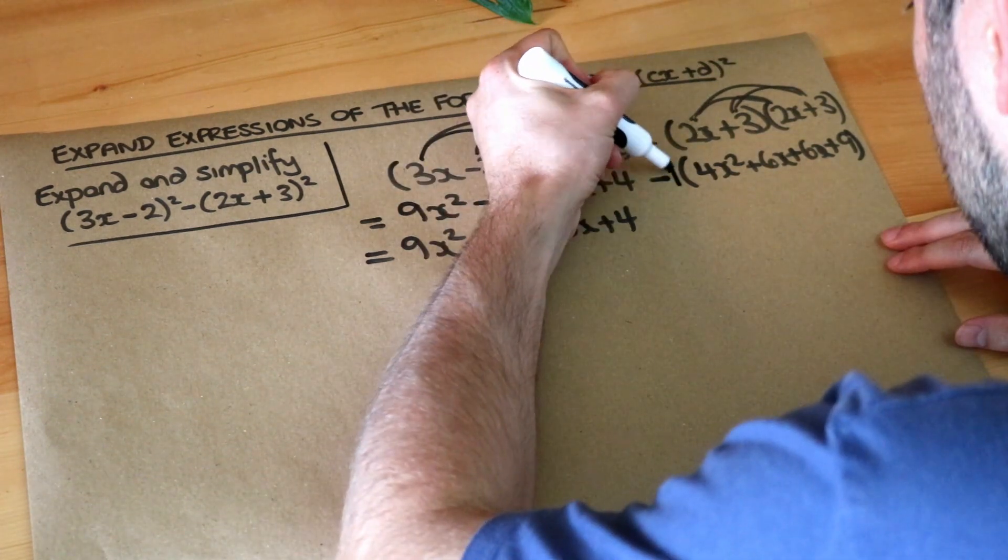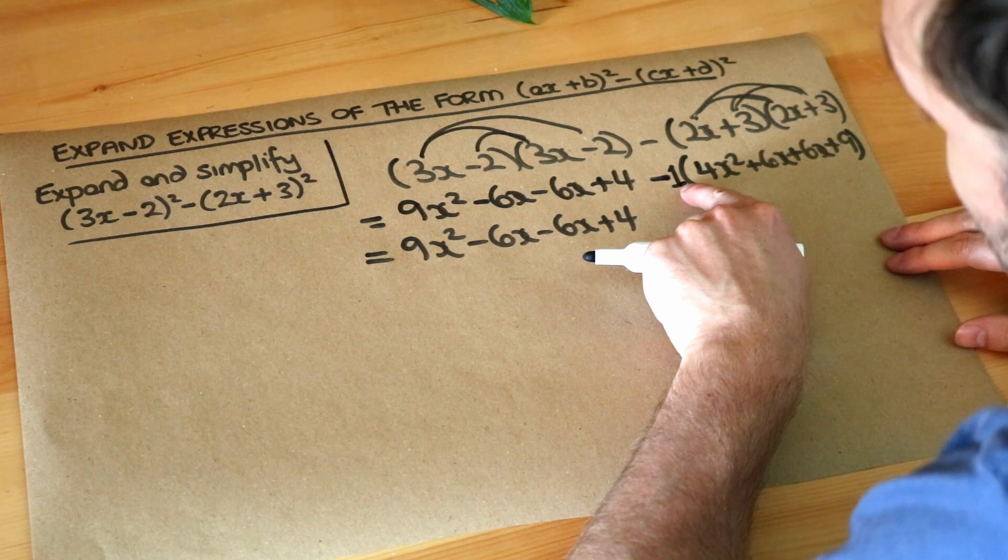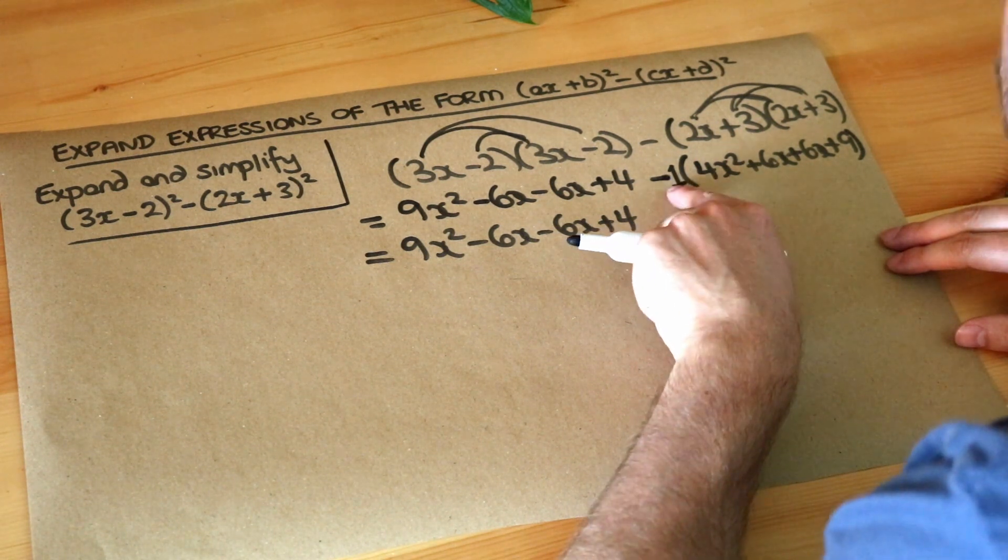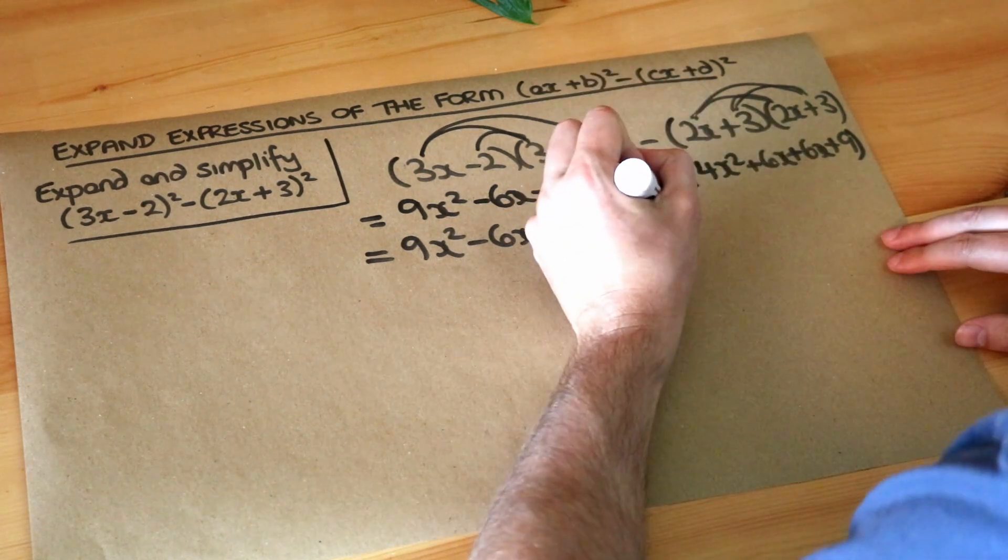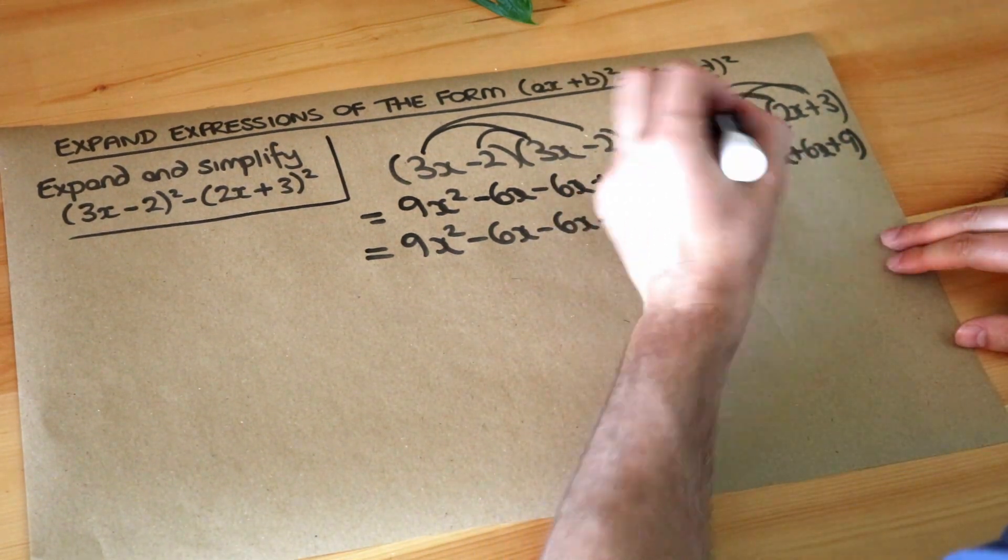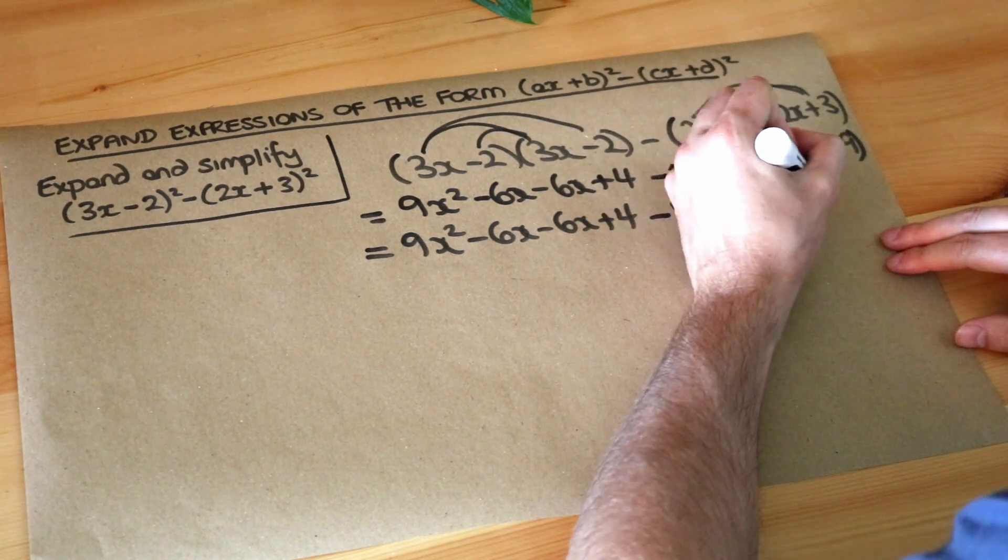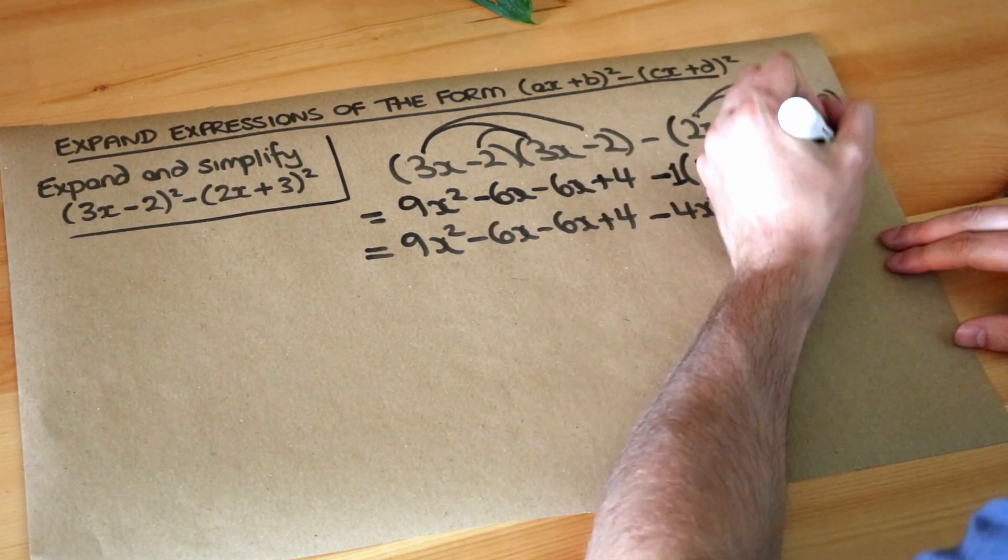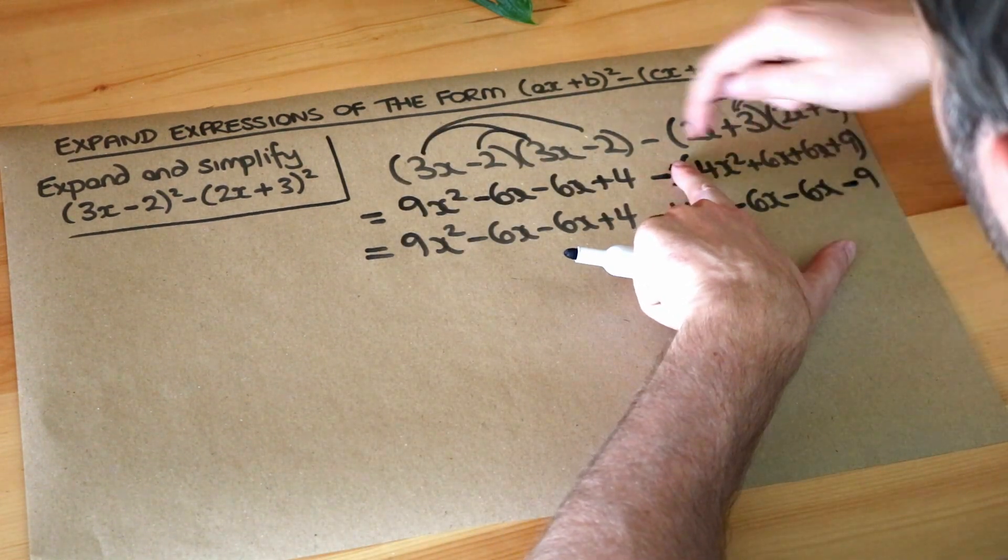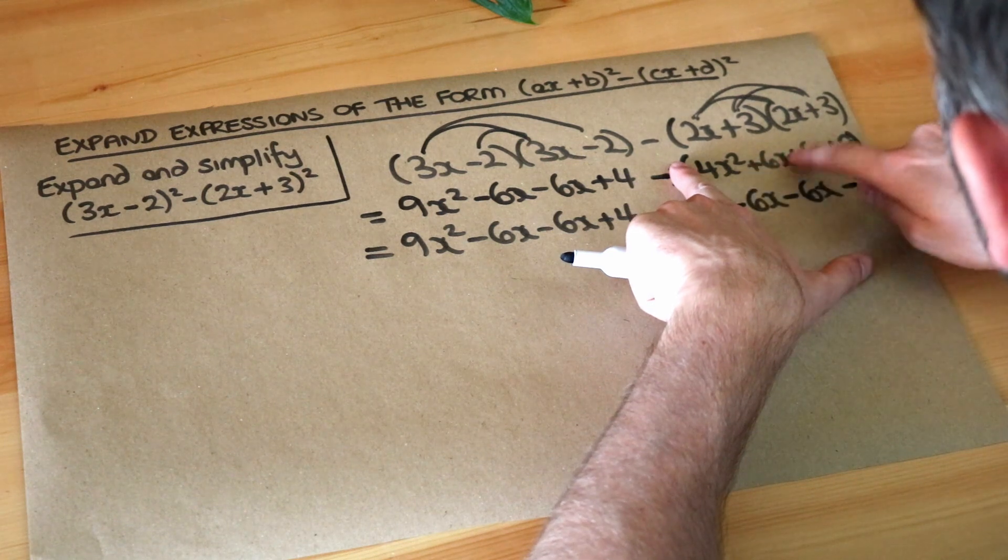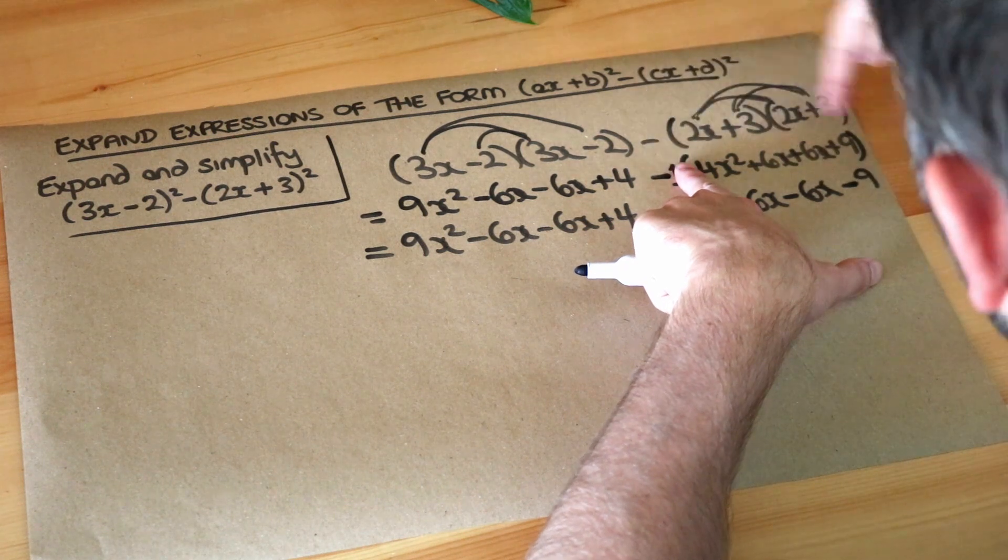And what we could do is we could put this kind of 1 here because when we're subtracting a bracket there's a kind of implicit 1 on the front of it. So we can do -1 times each of the things in the bracket. So -1 times 4x² is -4x², -1 times 6x is -6x, -1 times 6x is -6x, and -1 times 9 is -9. Or even without the 1, if you've got a minus in front of the bracket you just negate each thing inside the bracket. So it's -4x² -6x -6x -9.